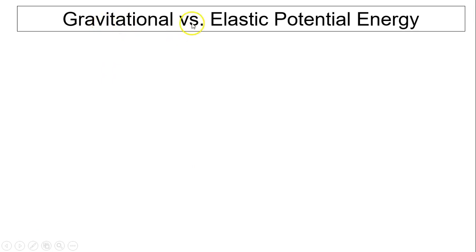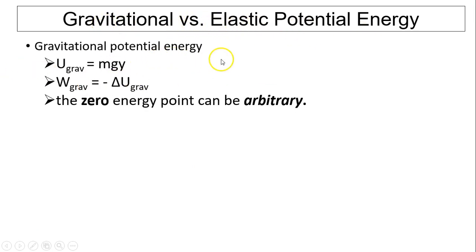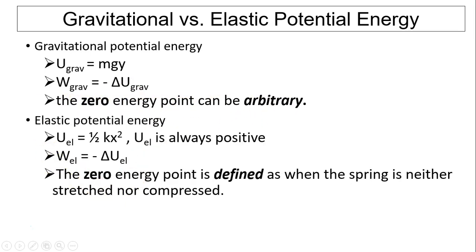Let's compare gravitational versus elastic potential energy. For gravitational potential energy, the equation is mgy, and the work done by gravity equals the negative change in gravitational potential energy. The zero energy point can be arbitrary. For elastic potential energy, the equation is one-half kx squared, and U_el is always positive. Similarly, work done by the elastic force equals the negative change in elastic potential energy. The difference is that the zero energy point is defined as when the spring is neither stretched nor compressed — it is not arbitrary.